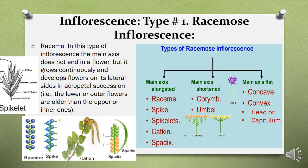Under the first category where the main axis is elongated, there are five subtypes: raceme, spike, spikelet, catkin, and spadix. In raceme inflorescence, the main axis is elongated and bears stalked flowers, as seen in the image. In spike inflorescence, the main axis is elongated but bears non-stalked flowers — the flowers lack stalks.